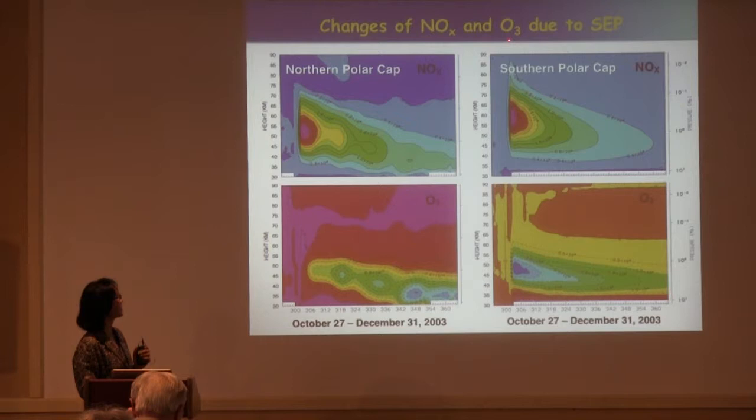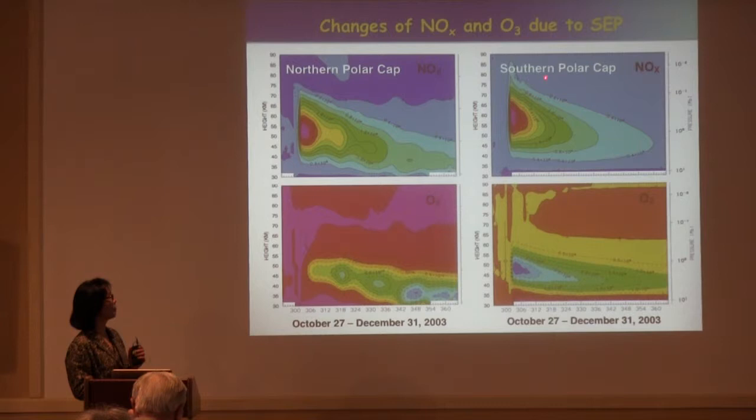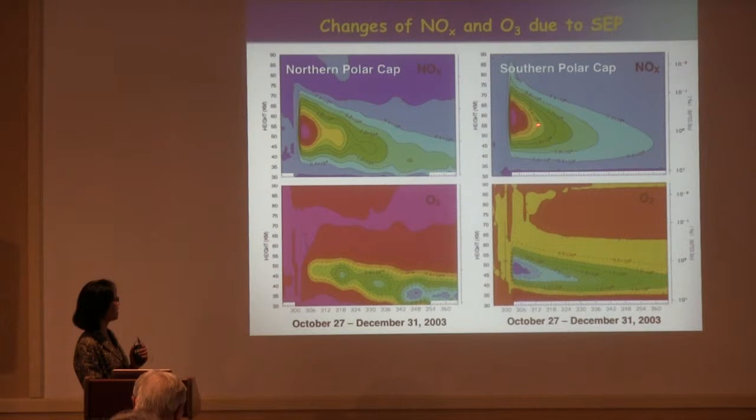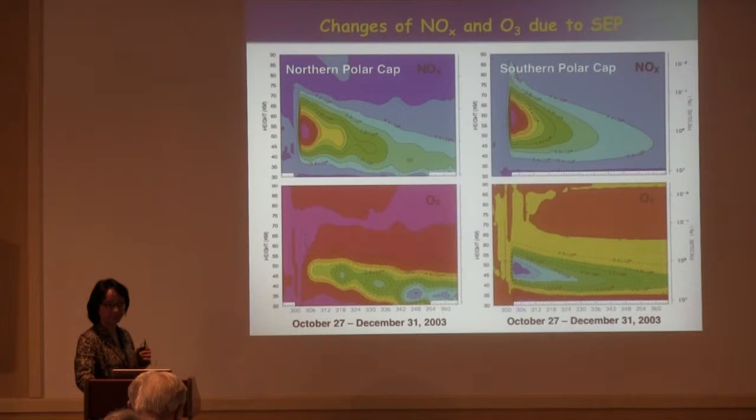This is exactly the case during the Halloween storm. The NOx changes in both the northern and southern hemispheres are due to precipitating solar energetic protons. The peak starts from about 50 kilometers and then descends down into the upper atmosphere. Consequently, the resulting ozone depletion is very long-lasting as well, persisting for several months at least.